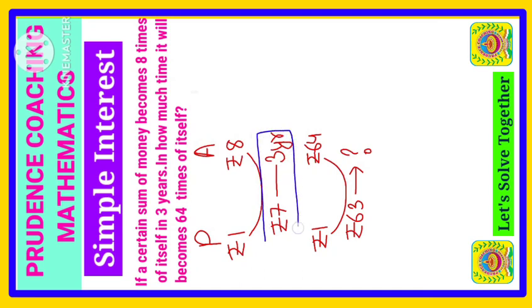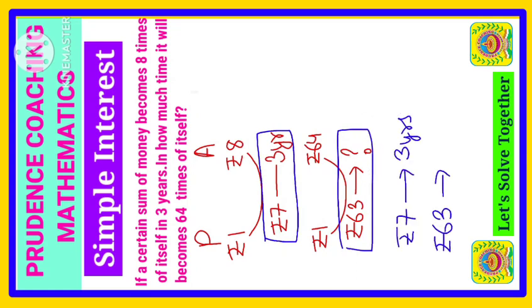So rupees seven it is becoming in three years. Your rupees 63 will become in how many years? So if you observe, this seven into nine it will get 63, that means the interest is becoming nine times.